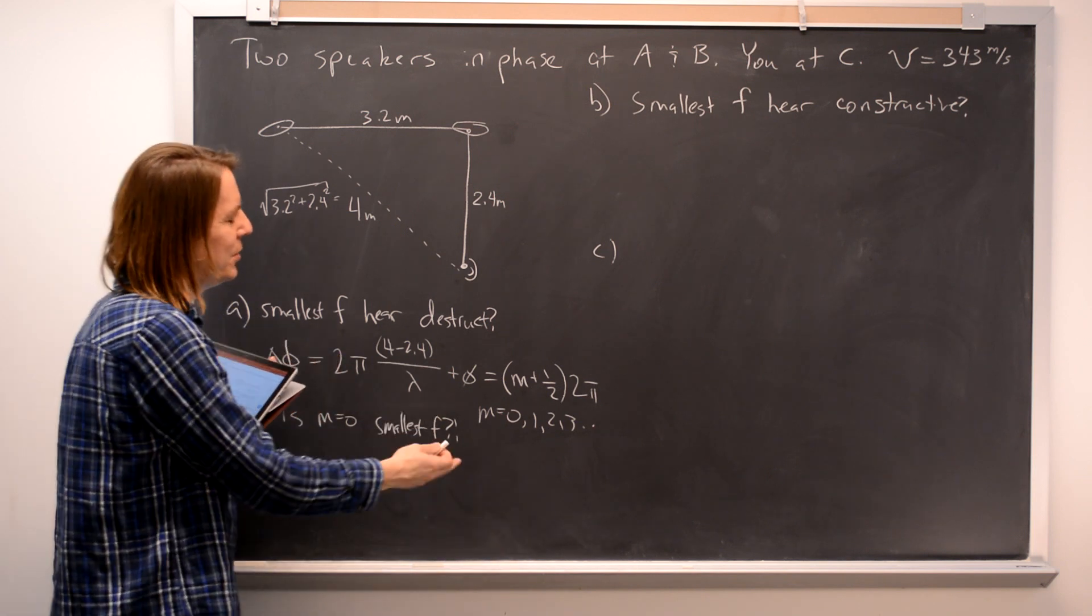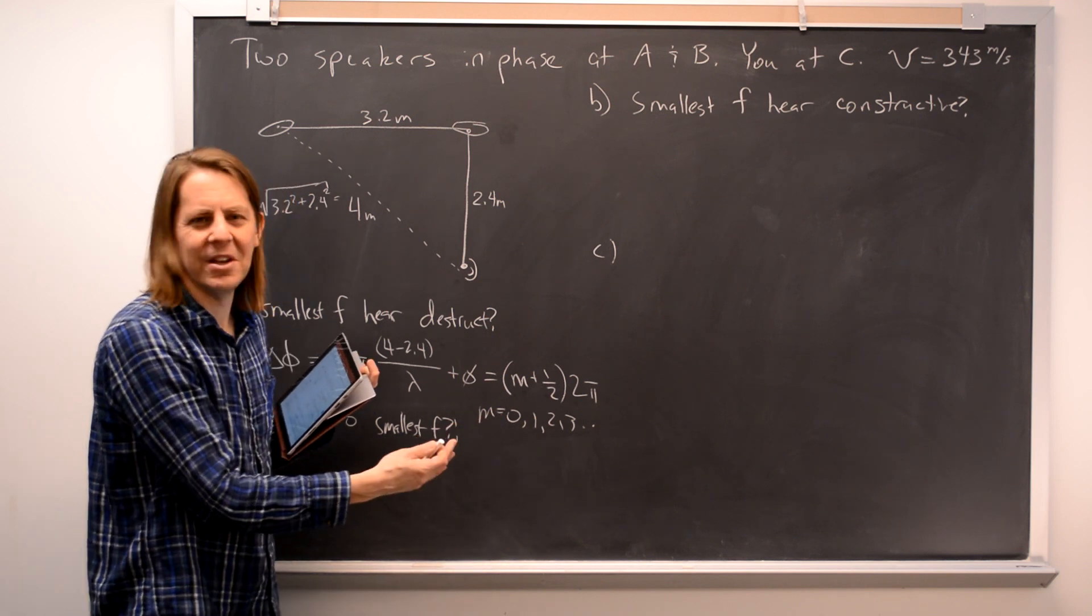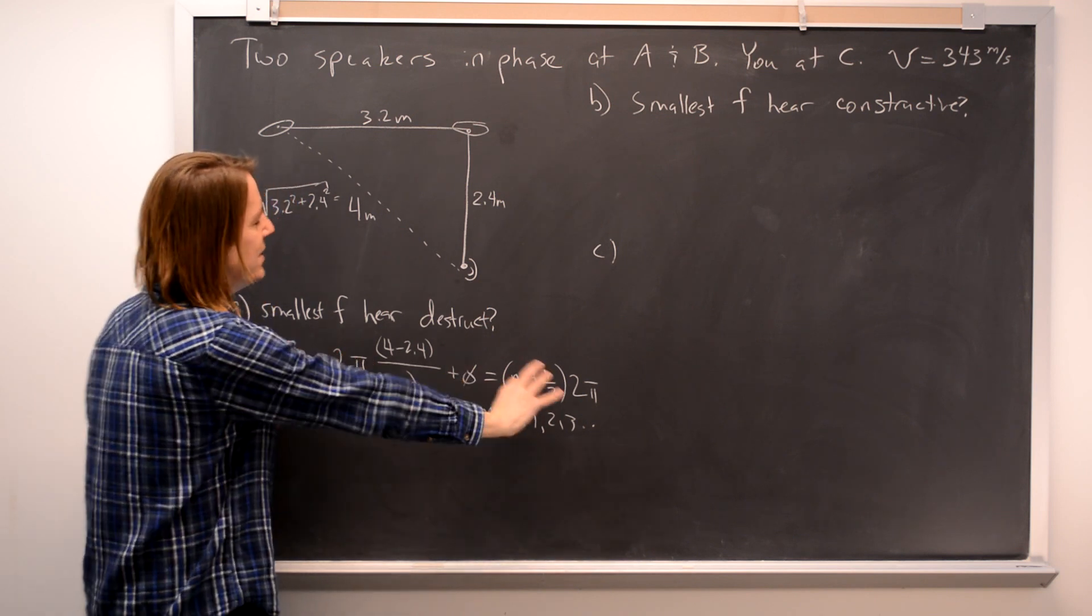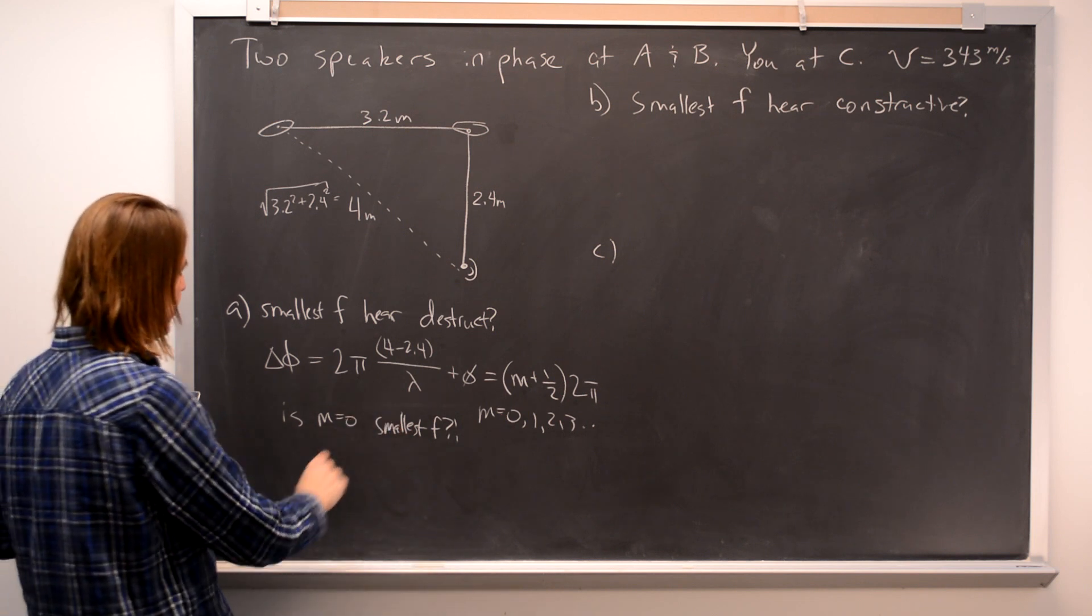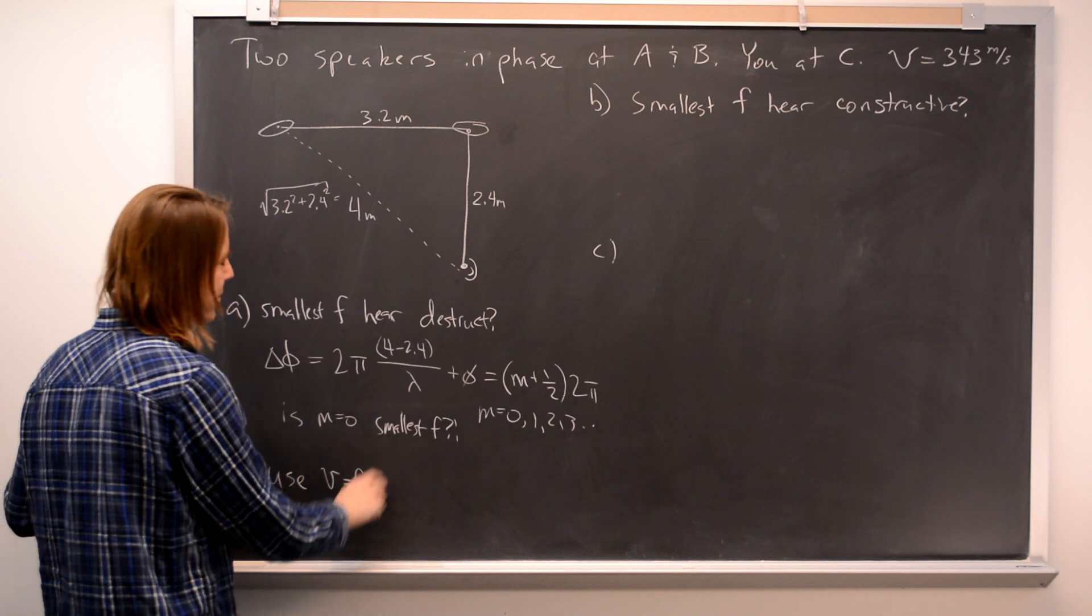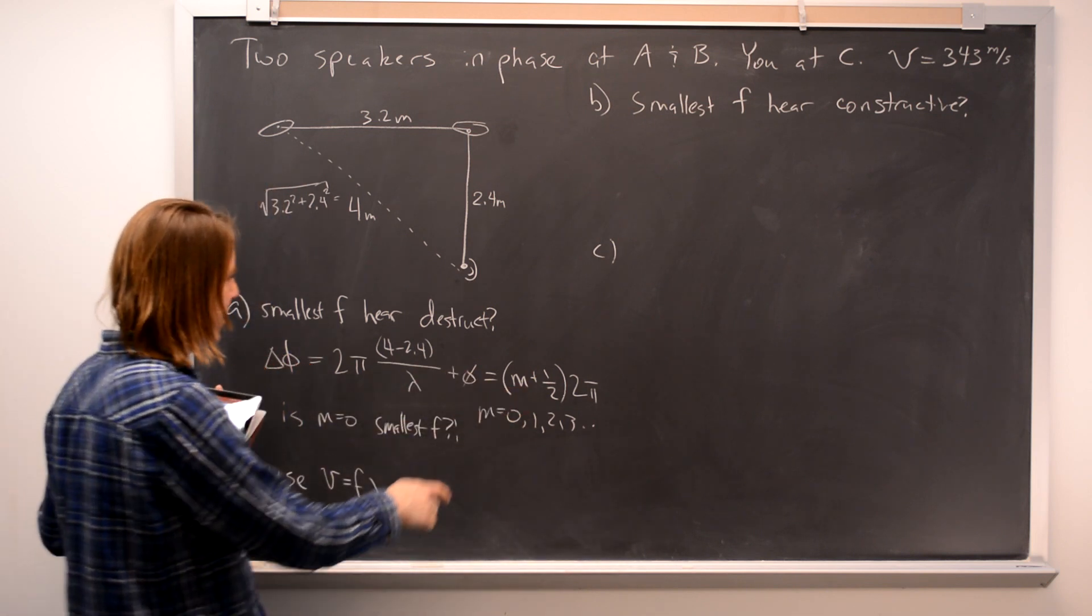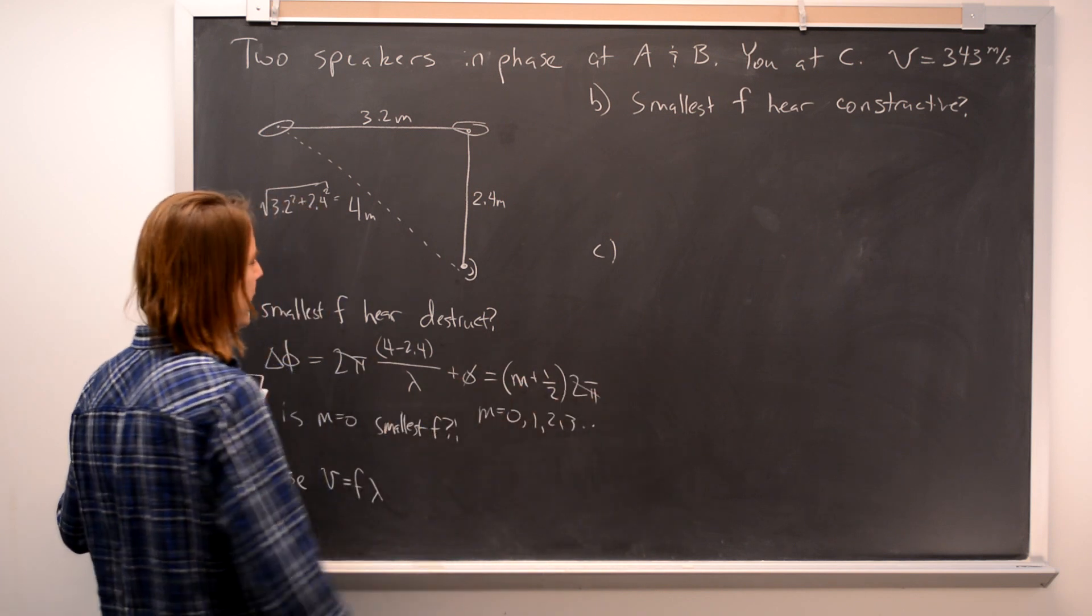It's going to be true because you're either going to pick one extreme 0 or the other extreme infinity. That doesn't sound right. But if you want to see it a little bit, what I would do is use velocity is frequency times wavelength. And go ahead and put the frequency in this formula. And then you might see it better.